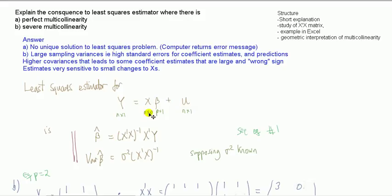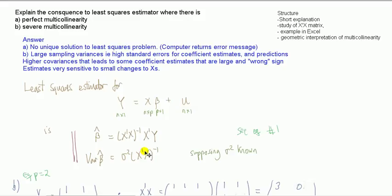If I have a sample of n observations and p parameters, then x-transpose-x is a p-by-p matrix. Looking at this variance-covariance matrix, because it's p-by-p, the diagonal entries will denote the variances — the estimated variances of the beta-hat. The off-diagonal elements will represent the covariances between the parameter estimates.